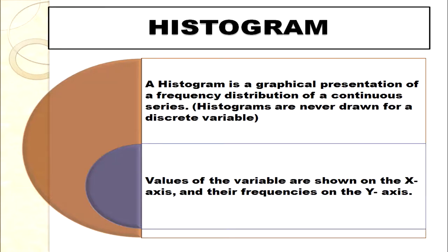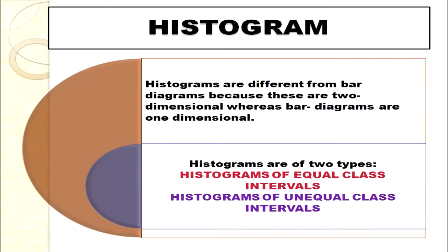When drawing a histogram, values of the variables are shown on the x-axis and their frequencies on the y-axis. Histograms are different from bar diagrams: histograms are two-dimensional whereas bar diagrams are one-dimensional. So histogram can be drawn for frequency distribution of a continuous series only, and it is two-dimensional unlike bar diagrams.